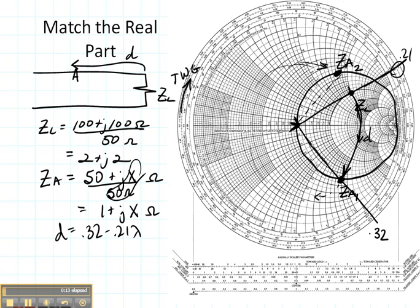I rotated a distance D towards the generator until I landed on the matching circle of the Smith chart. There were two places, ZA1 or I could have used ZA2. In this case, I decided to have D be the shortest possible length, so I stopped at ZA2.